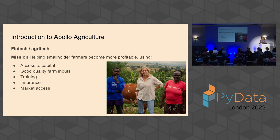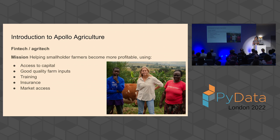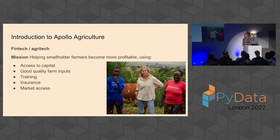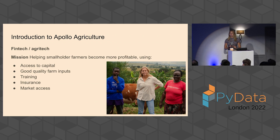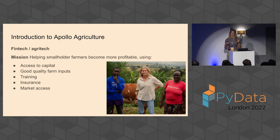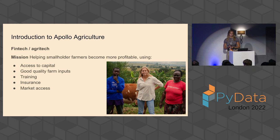I'm going to go through a real-world example that I encountered during my job. I work at Apollo Agriculture — it's a fintech slash agritech company. Our mission was to help smallholder farmers become more profitable. We give them good quality inputs, training, insurance, and access to the market. But quickly we found out that the biggest bottleneck for smallholder farmers was access to capital. So our main product is that we give farmers a loan — not in terms of money, but seeds and fertilizer to plant the next season. After they harvest, they sell, make a lot of profit, pay us back, and keep their own share.